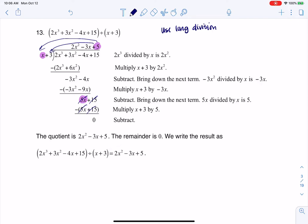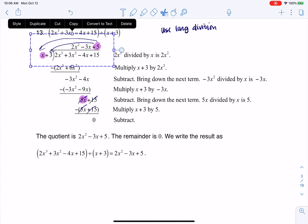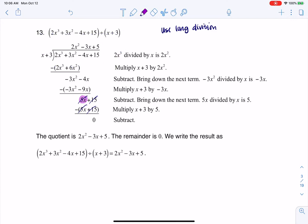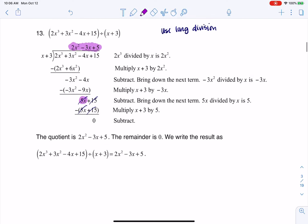So the quotient, I keep erasing but it gets super crowded. Our quotient is up here. It's actually 2x cubed minus 3x plus 5. And the remainder is 0.